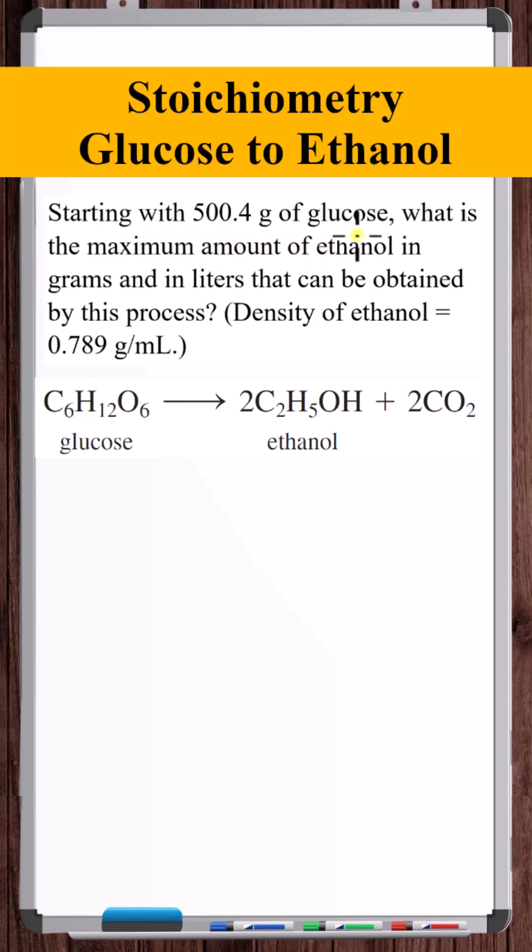Starting with 500.4 grams of glucose, what is the max amount of ethanol that can be obtained by this fermentation process? This is the balanced chemical equation.